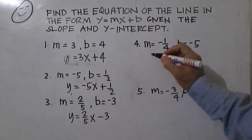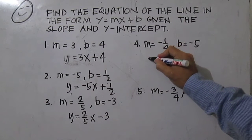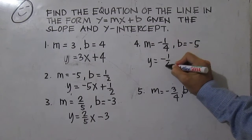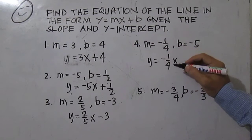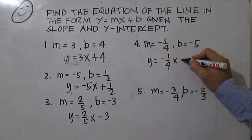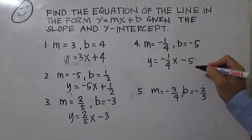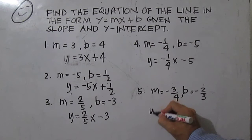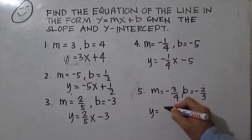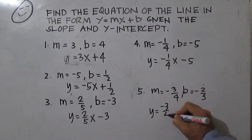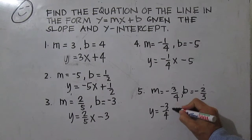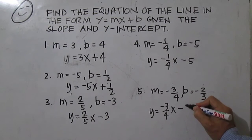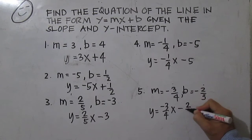Number 4, y equals negative 1 fourth x minus 5. And for number 5, we have y equals negative 3 over 4x minus 2 thirds.